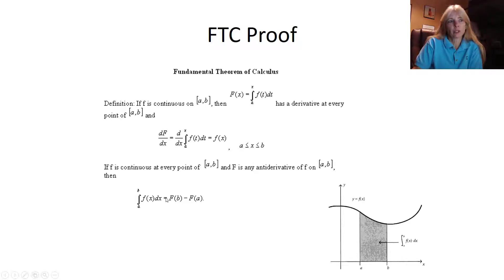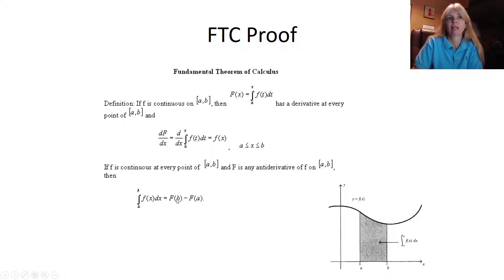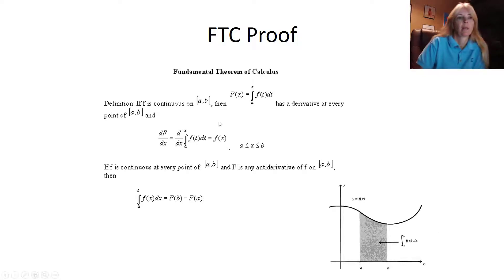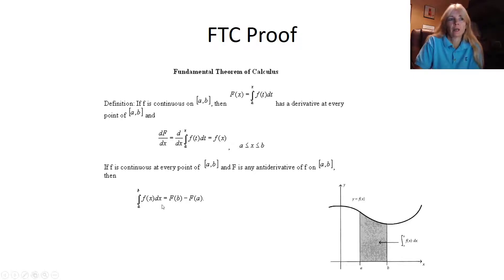All we're interested in is this last line, which says: if I can find the antiderivative — which is the capital F — then I can plug in my interval. We always do the largest value first: F(B) minus F(A). What that gives me is the area underneath the curve, and this is huge.